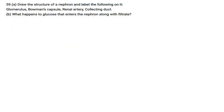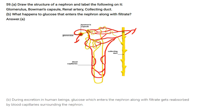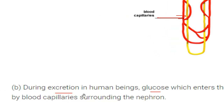Draw the structure of a nephron and label the glomerulus, Bowman's capsule, renal artery, and collecting duct. The diagram shows the glomerulus, Bowman's capsule, collecting duct, and blood capillaries. What happens to glucose that enters the nephron along with the filtrate? During excretion, glucose that enters the nephron with the filtrate gets reabsorbed by the blood capillaries surrounding the nephron.